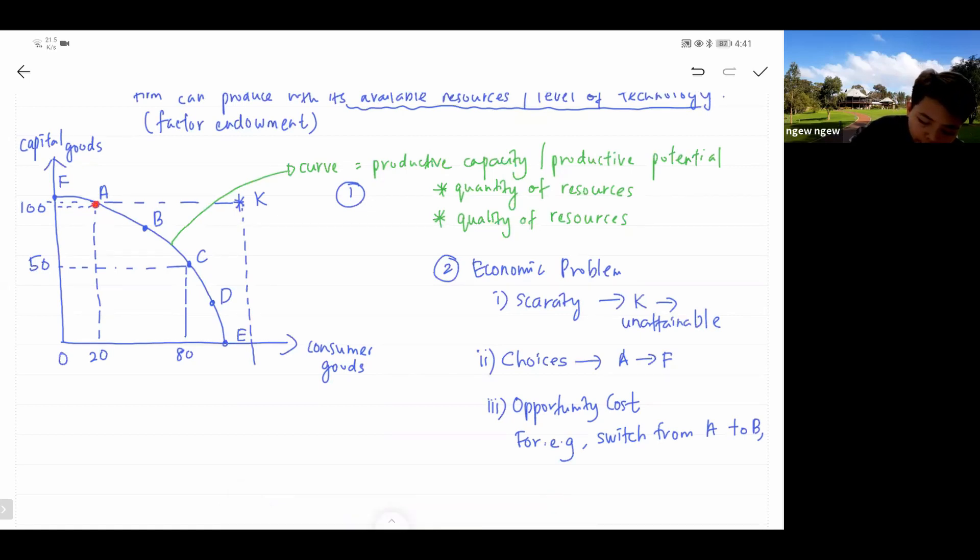In combination B, you are producing 50 consumer goods and let's say 75 capital goods. As you can see from combination A to combination B, you increase the production of consumer goods by 30 units.